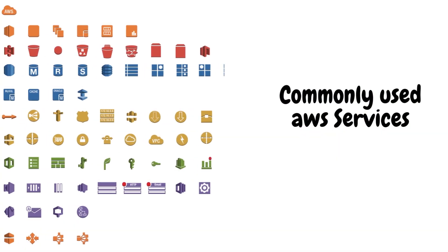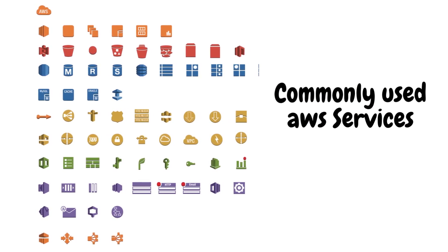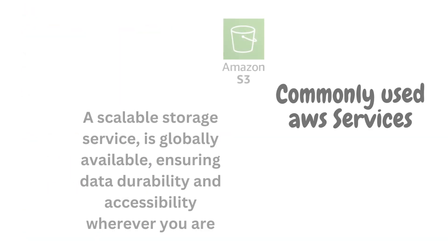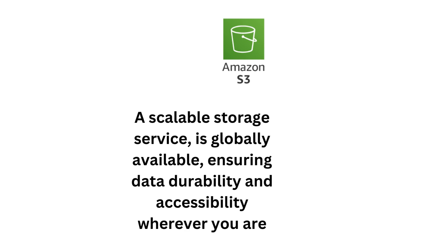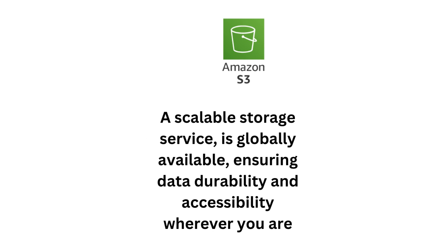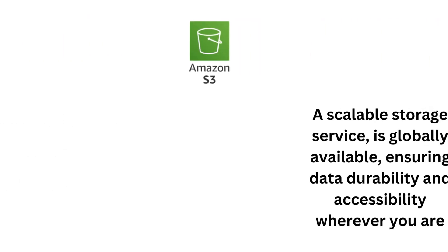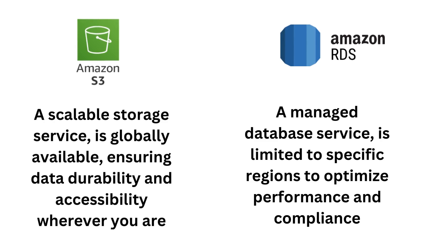Now let's take a closer look at AWS services. Some services are globally available while others are region-specific. For example, Amazon S3, a scalable storage service, is globally available ensuring data durability and accessibility wherever you are. On the other hand, Amazon RDS, a managed database service, is limited to specific regions to optimize performance and compliance.